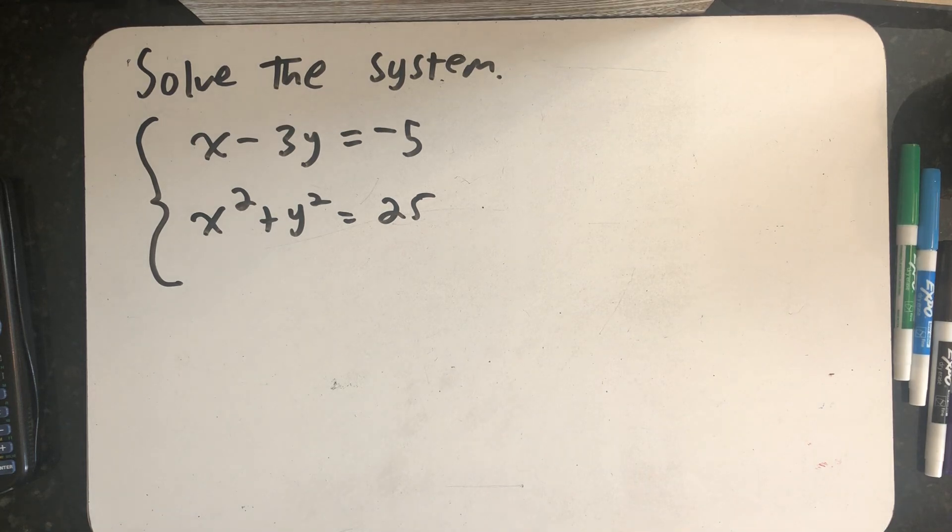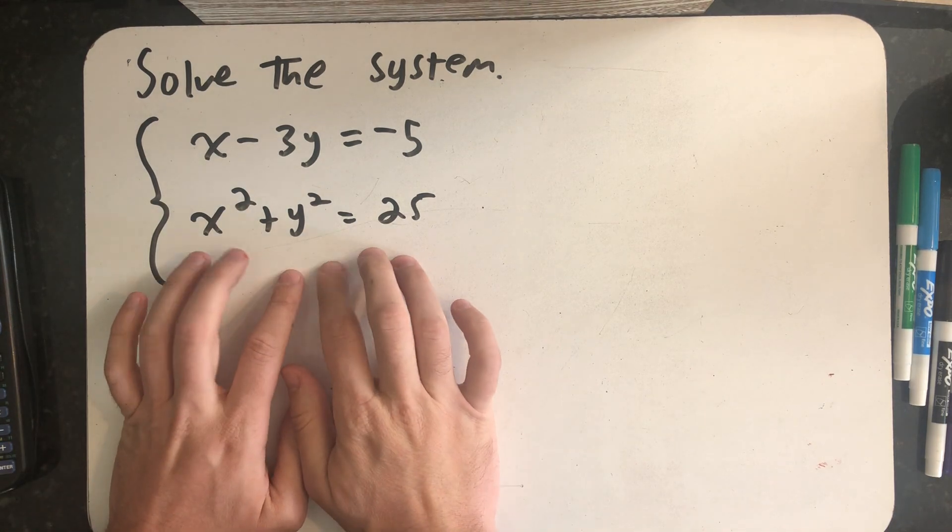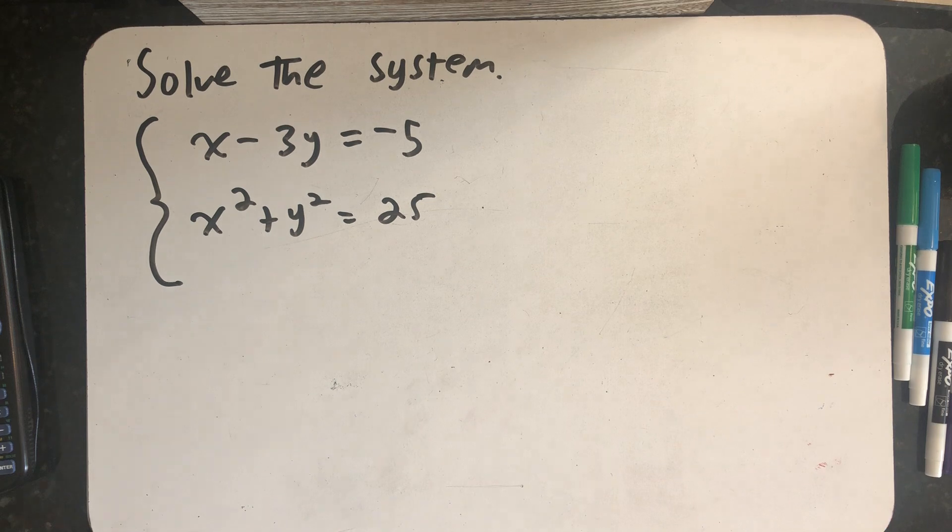Let's solve this system of nonlinear equations. The system is called nonlinear because the bottom equation has these squares in it. The top equation is actually itself linear.